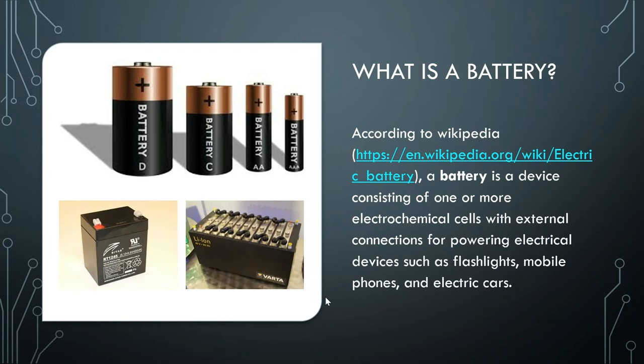What is a battery? According to Wikipedia, a battery is a device consisting of one or more electrochemical cells with external connections for electrical devices such as flashlights, mobile phones, and electric cars.